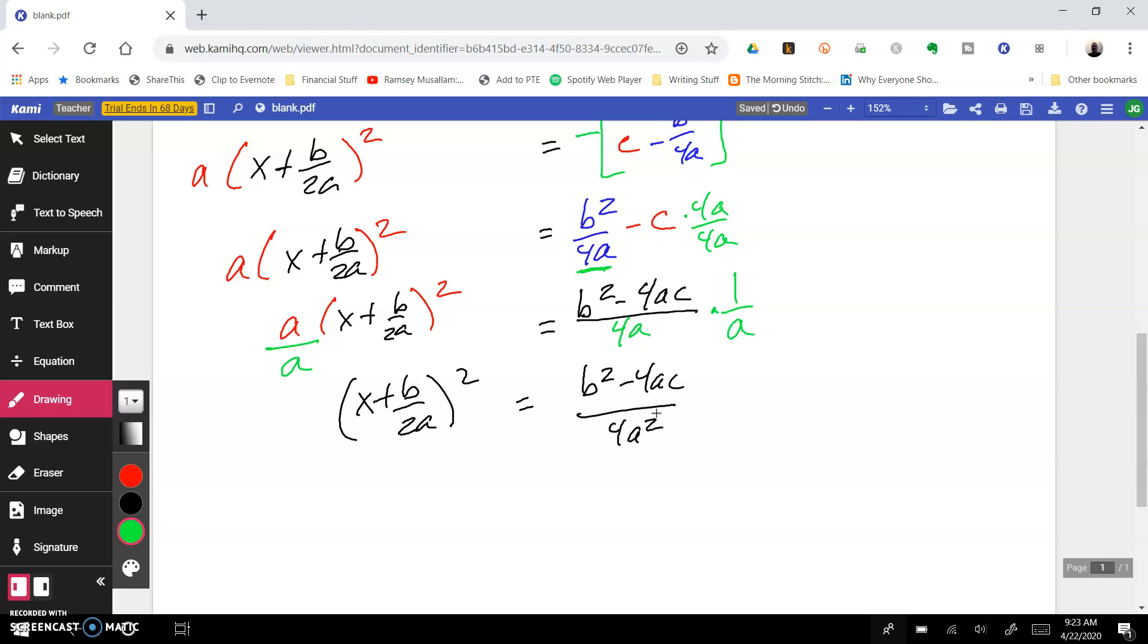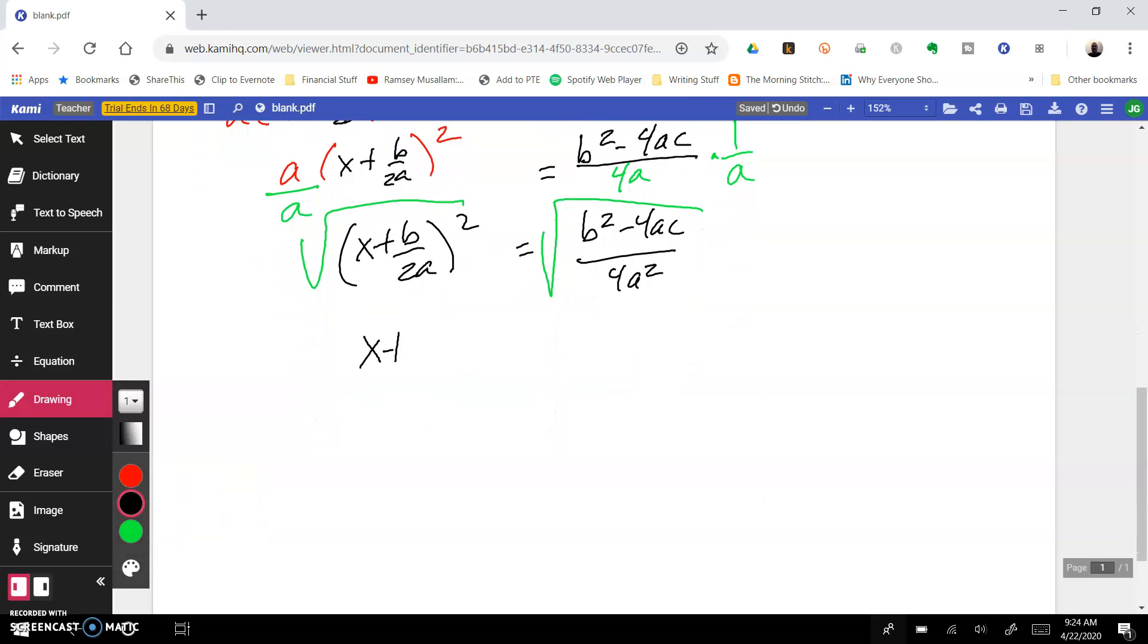Whew, getting close. Notice we are now to the point where we take the square root of each side. That leaves us with x plus b over 2a on the left. And on the right we have plus or minus, that should sound familiar, the square root of b squared minus 4ac over 4a squared. Just a reminder about how to do fractions when you have square roots is you take the square root of the top and the square root of the bottom. This stuff on the bottom, that's a perfect square. The top leaves us with plus or minus the square root of b squared minus 4ac. And the square root of 4a squared, we take the square root of 4, which is 2, square root of a squared, which is a. And this is starting to look more and more like the quadratic formula.